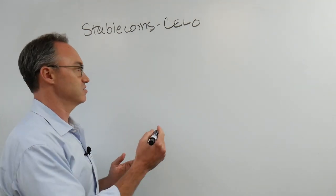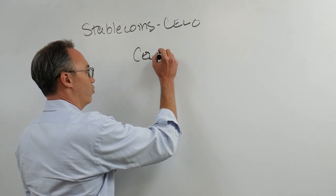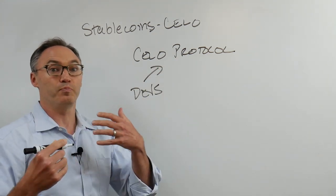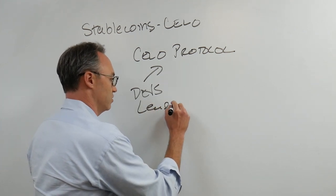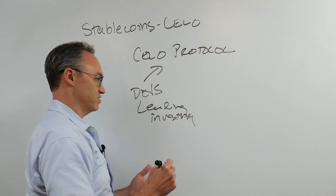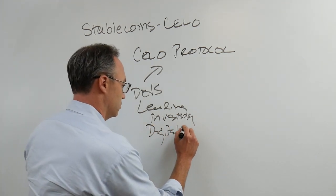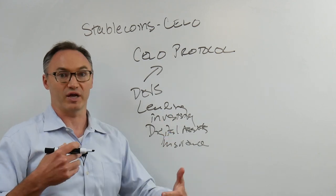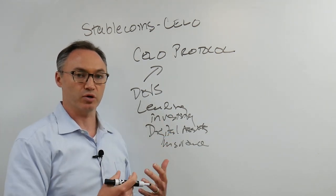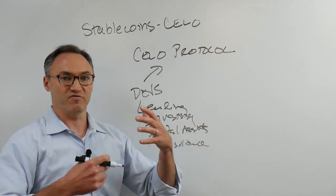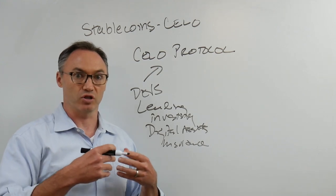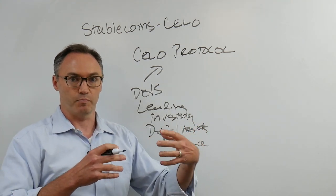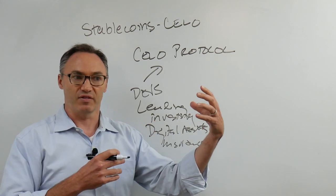What Celo has done is they have the Celo network protocol, and they're allowing developers to come in here and use the protocol to build financial applications - lending, investing, digital assets. I'm betting there'll be insurance, especially because a lot of people using this are probably in farming and agriculture. So there'll be insurance based on this Celo protocol.